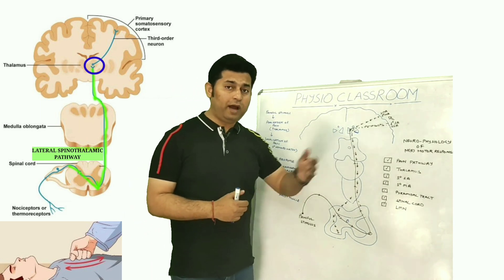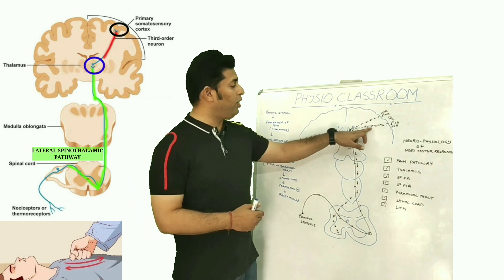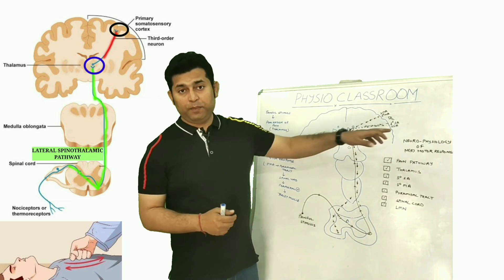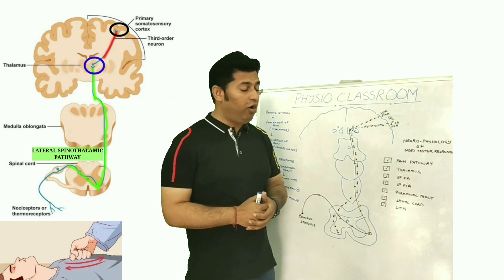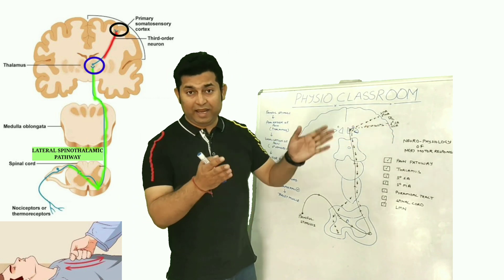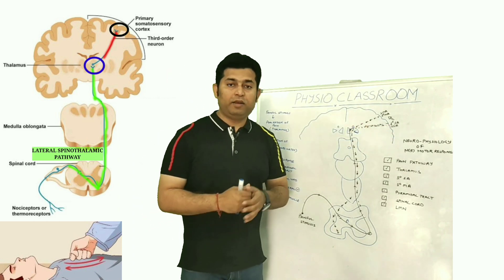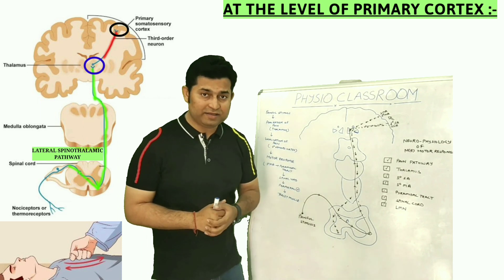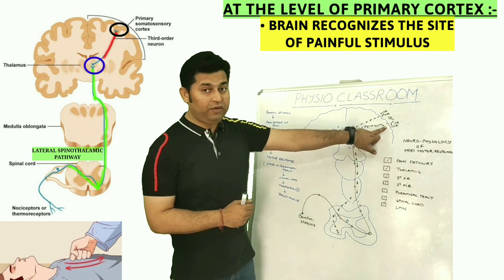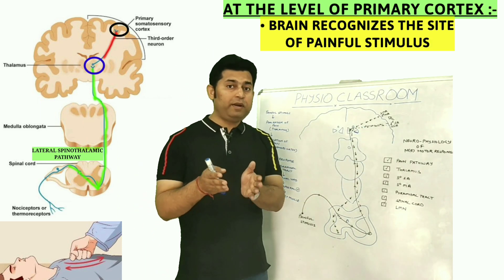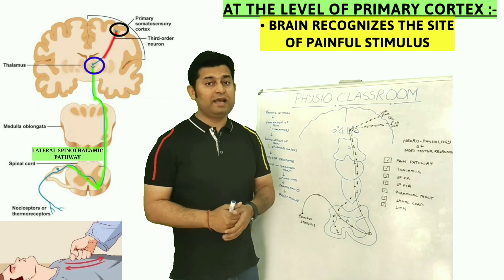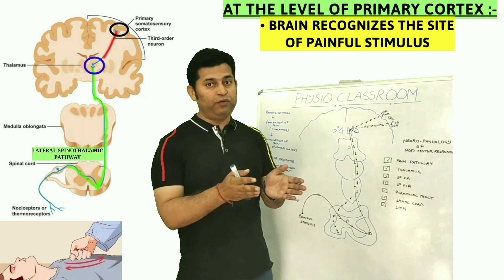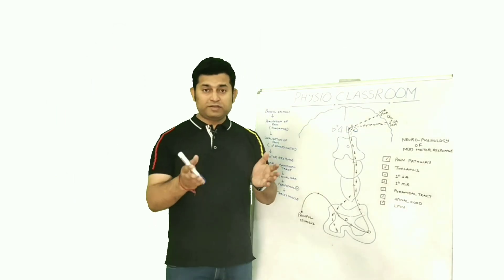The information is carried further up via thalamocortical projections and finally reaches the parietal cortex at the level of the primary sensory area. Here the painful stimulus is further processed and analyzed, and for the very first time the brain is able to appreciate and localize the exact site of that painful stimulus.